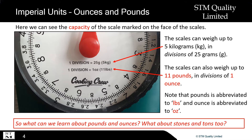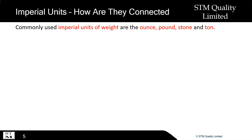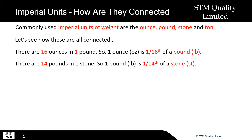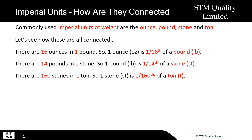So what can we learn about pounds and ounces? What about stones and tons too? Commonly used imperial units of weight are the ounce, pound, stone and ton. Let's see how these are all connected. There are 16 ounces in one pound, so one ounce is one sixteenth of a pound. There are 14 pounds in one stone, so one pound is one fourteenth of a stone. There are 160 stones in one tonne, so one stone is one one hundred and sixtieth of a tonne.